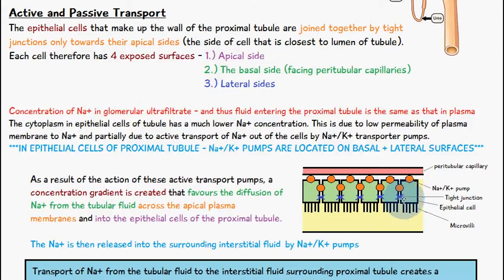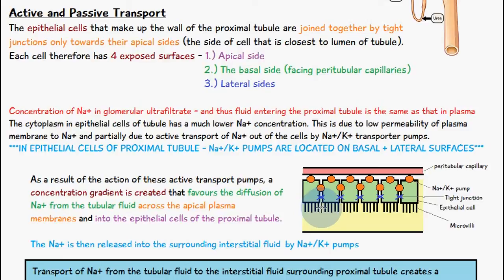Each epithelial cell has four sides. The apical side is closest to the lumen of the tubule and has microvilli extensions to increase the surface area for absorption. The basal side faces the peritubular capillary, and there are two lateral sides on either side of the cell.